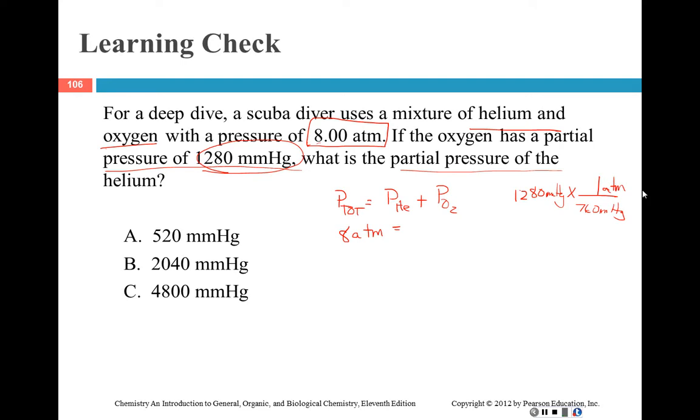What are we going to have to do with that? If we're going to leave it in atmospheres, then we'll just say 1280 millimeters of mercury times the magic number—760 millimeters of mercury is 1 atmosphere. So 1280 divided by 760 gives us approximately 1.68 atmospheres of oxygen. The partial pressure of helium is going to be 8 minus 1.68. Now notice I did this without looking to see what the answer was asking for, so I could have made it a lot easier on myself. I could have done it in millimeters of mercury, but that's okay.